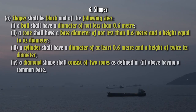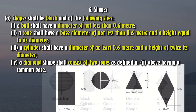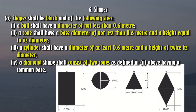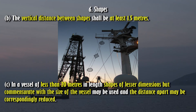Section 6 — Shapes. Shapes shall be black and of the following sizes: (1) A ball shall have a diameter of not less than 0.6 meter. (2) A cone shall have a base diameter of not less than 0.6 meter and a height equal to its diameter. (3) A cylinder shall have a diameter of at least 0.6 meter and a height of twice its diameter. (4) A diamond shape shall consist of two cones as defined in (2) above having a common base. The vertical distance between shapes shall be at least 1.5 meters. In a vessel of less than 20 meters in length, shapes of lesser dimensions but commensurate with the size of the vessel may be used and the distance apart may be correspondingly reduced.